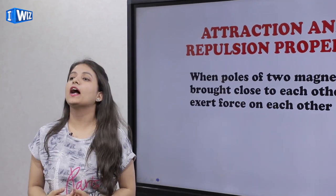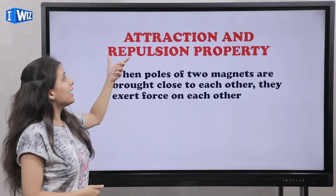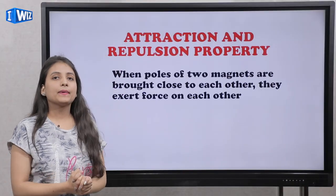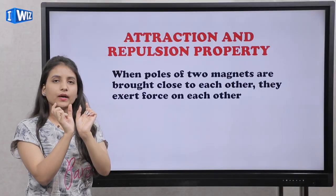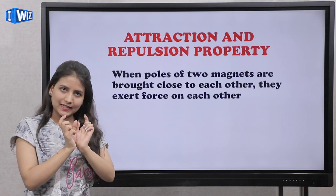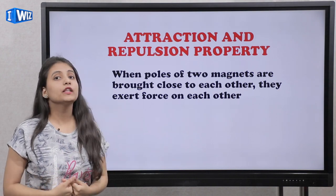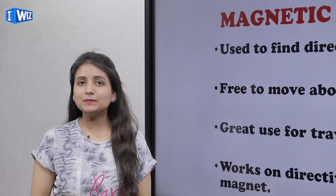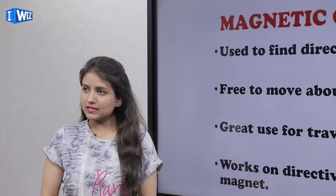The next property is the attraction and repulsion property. Unlike poles attract each other and like poles repel each other. Now we will talk about the magnetic compass.